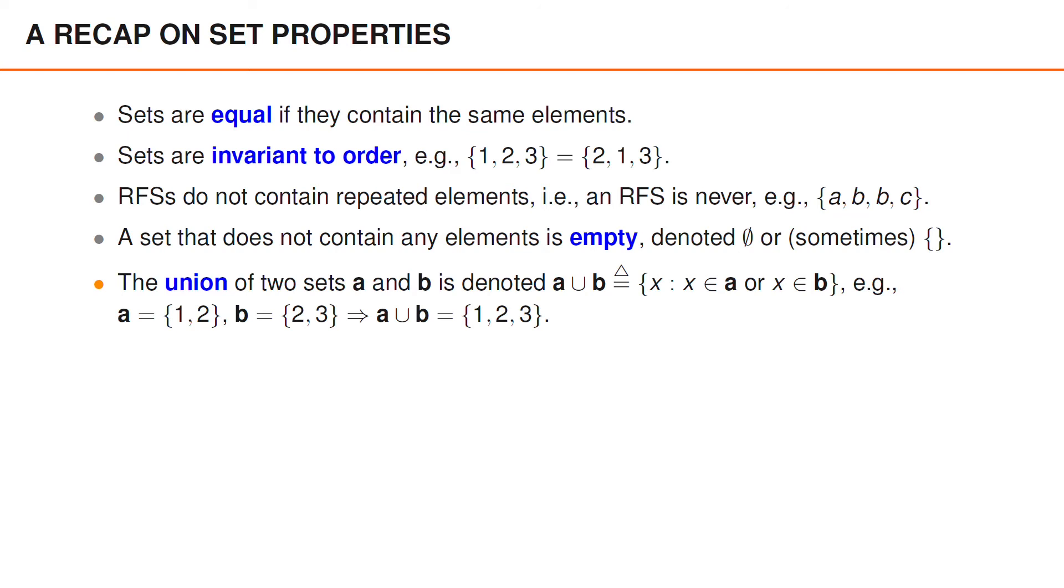The union of two sets, a and b, is the set of all elements that are in a or b, and is denoted as follows. For instance, if a contains 1 and 2, whereas b contains 2 and 3, the union of a and b contains the elements 1, 2, and 3.